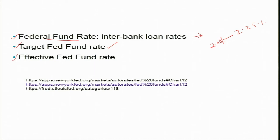When the FOMC announces the Fed fund rate, they are not announcing the actual Fed fund rate — because they cannot really determine it. The actual rate is determined by the demand for and supply of reserves by the banking system through market forces. What the Federal Reserve can do is set a target range, ensuring the rate falls between, say, 2% and 2.25%. That is what we read about in FOMC decisions.